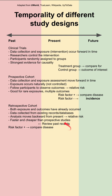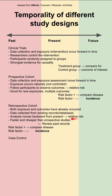In a retrospective cohort, you start in the present, reviewing past records and looking at who had the risk factor and who did not. You compare disease incidence, just like in the prospective cohort, and you end up with a relative risk.